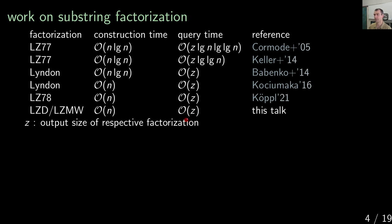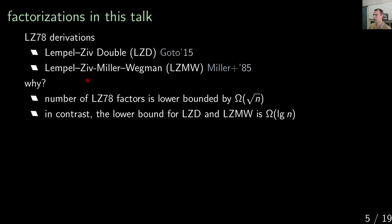So what are these derivatives? They're called LZ-Double and LZ-Miller-Wettner. Why do we care about these factorizations? The main issue is that for LZ78 the lower bound is not compelling — it's just a square root of n. In contrast, for LZD and LZMW we get a logarithmic lower bound, which is actually as good as you can achieve with a grammar.